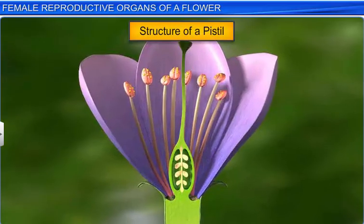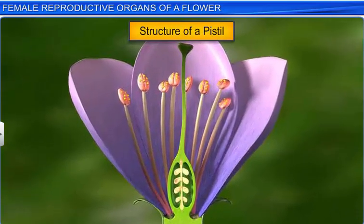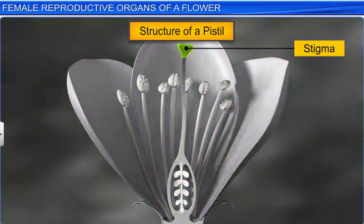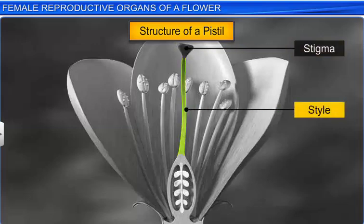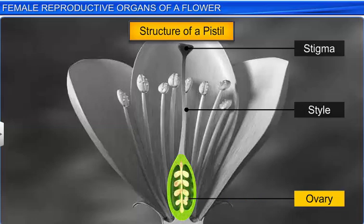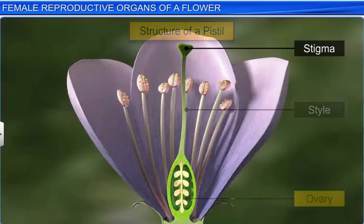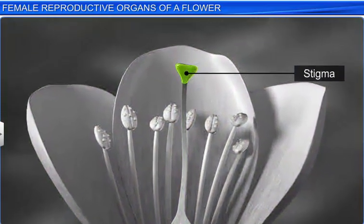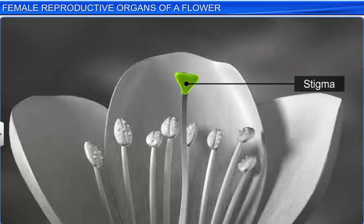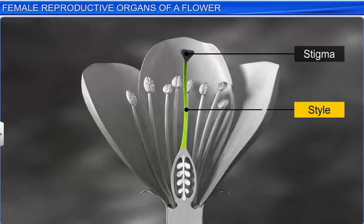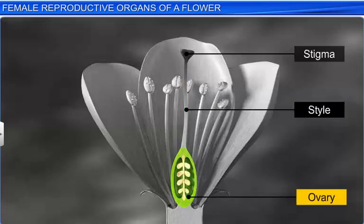If you observe the structure of a pistil, you will find that it consists of the stigma at the tip, followed by the style in the middle, and an ovary at the base. While the stigma is a landing platform for pollen grains, the style — an elongated slender structure — connects the stigma to the ovary, the basal bulging part of the pistil.